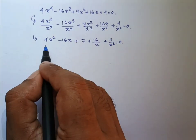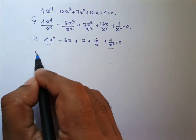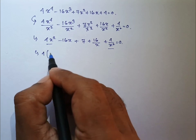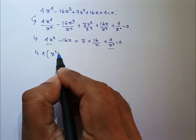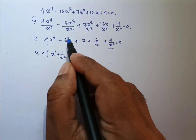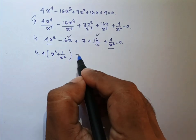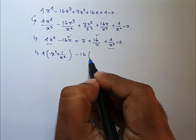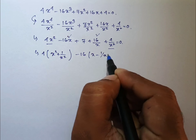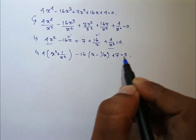Now from this expression, if I take common 4, then it will be x square plus 1 by x square. And from this one and this one, if I take common 16, it will be x minus 1 by x, plus 7 equal to 0.